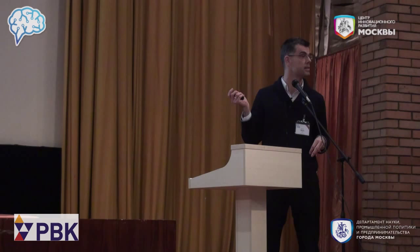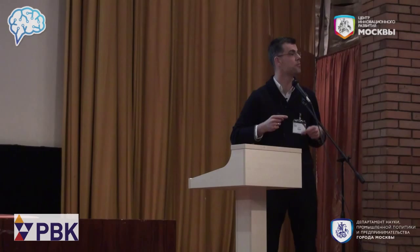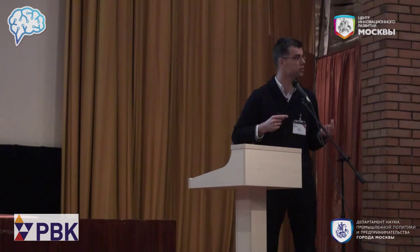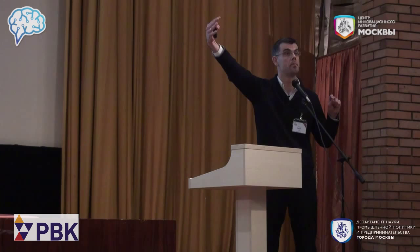Computationally, we can also reshuffle the genetic code — generate random assignments — to simply ask statistically: does one get this with a random shuffling? We shuffle the code, calculate the level of correlation, and count how many, out of one million shuffled codes, give better correlations than the real natural universal genetic code. It turns out that for more than half of the proteomes we looked at, we couldn't find a single shuffled random code whose correlations were better. Even in the worst example — M. tuberculosis — the universal genetic code was among the 99.9th percentile of the best codes. The universal genetic code seems to be optimized to give this level of matching.